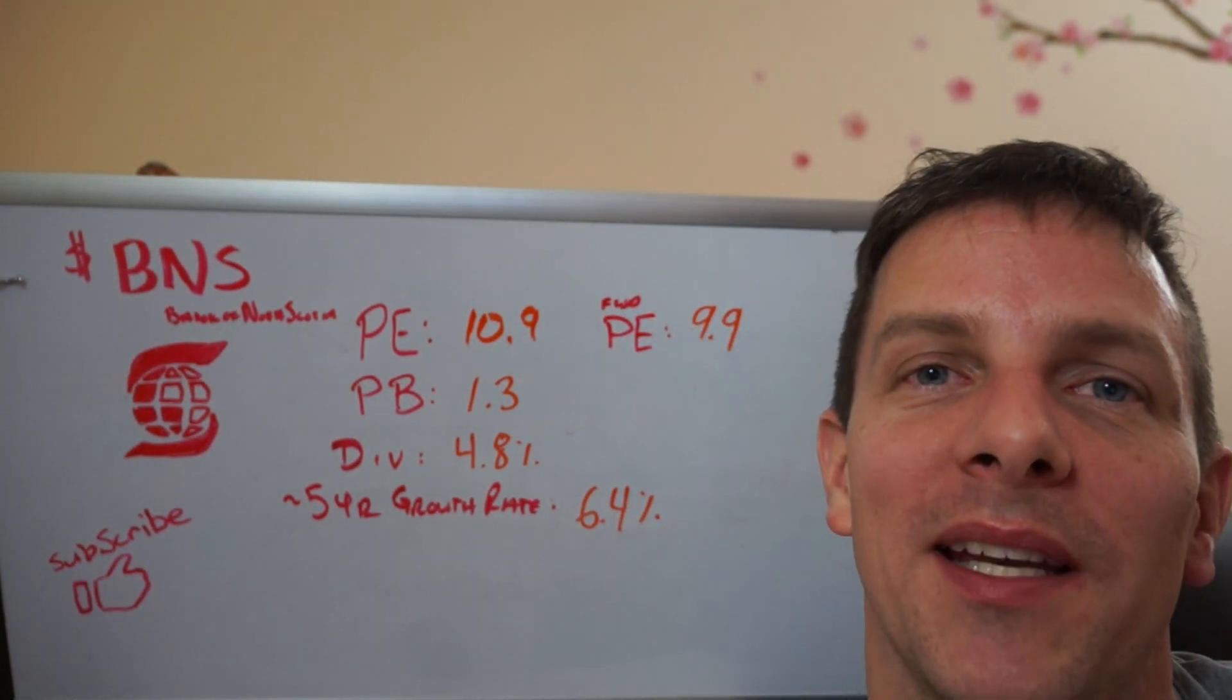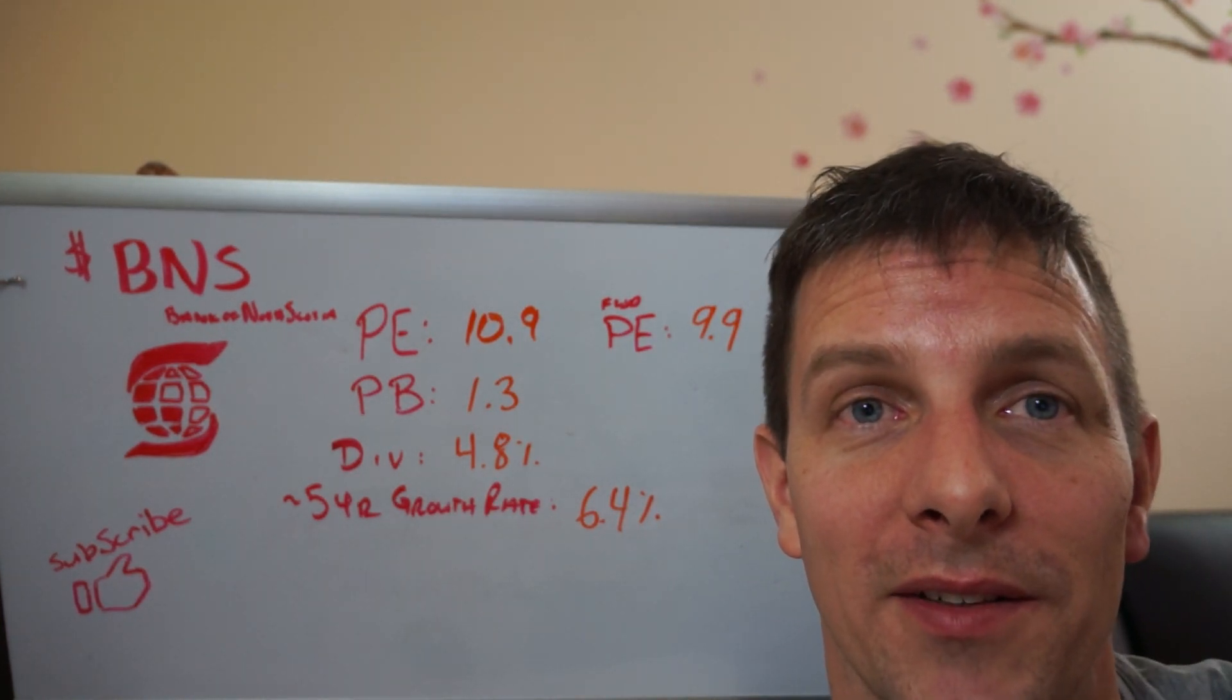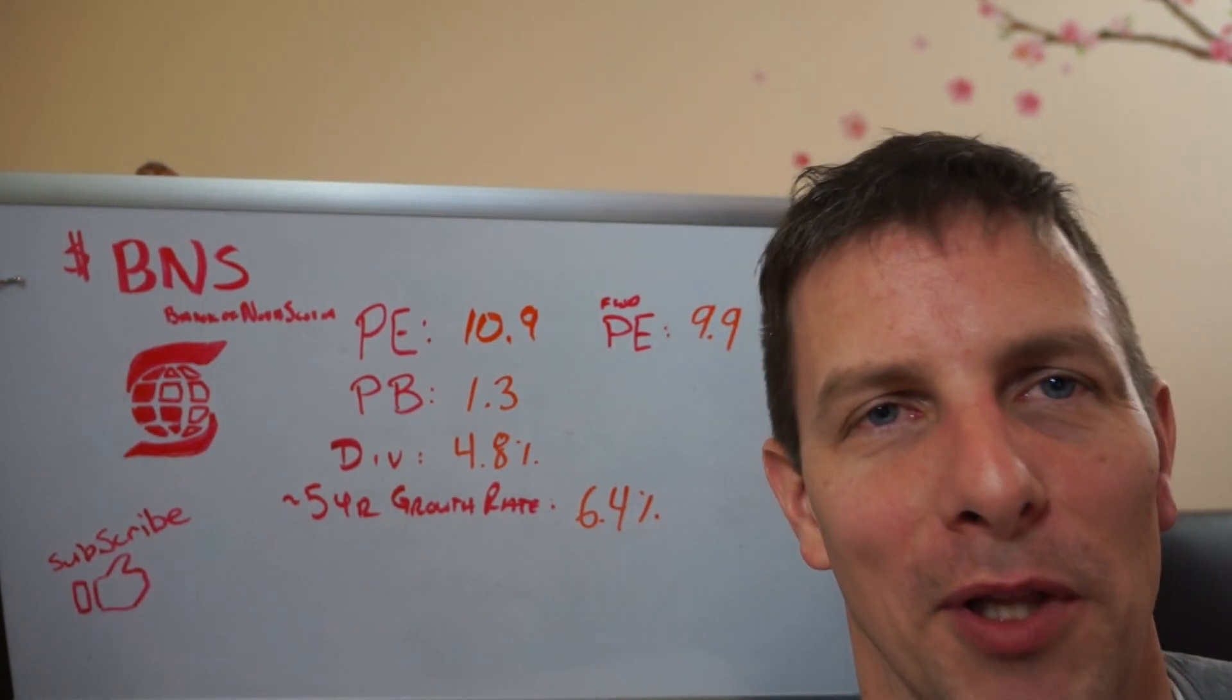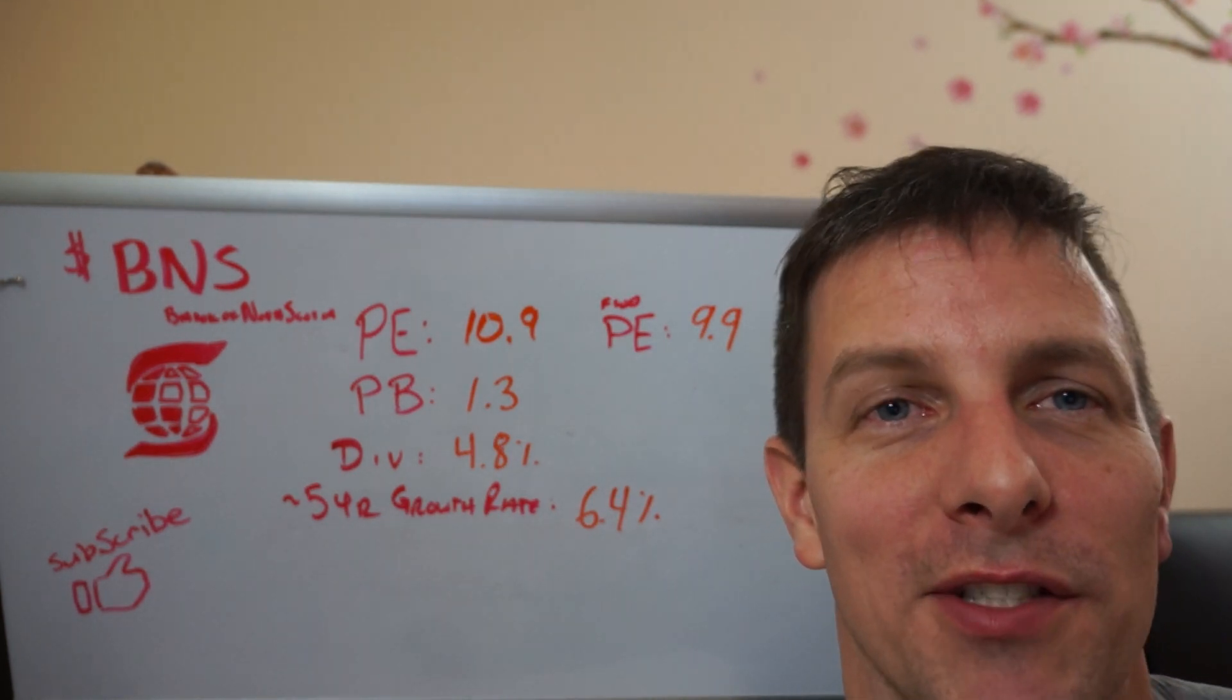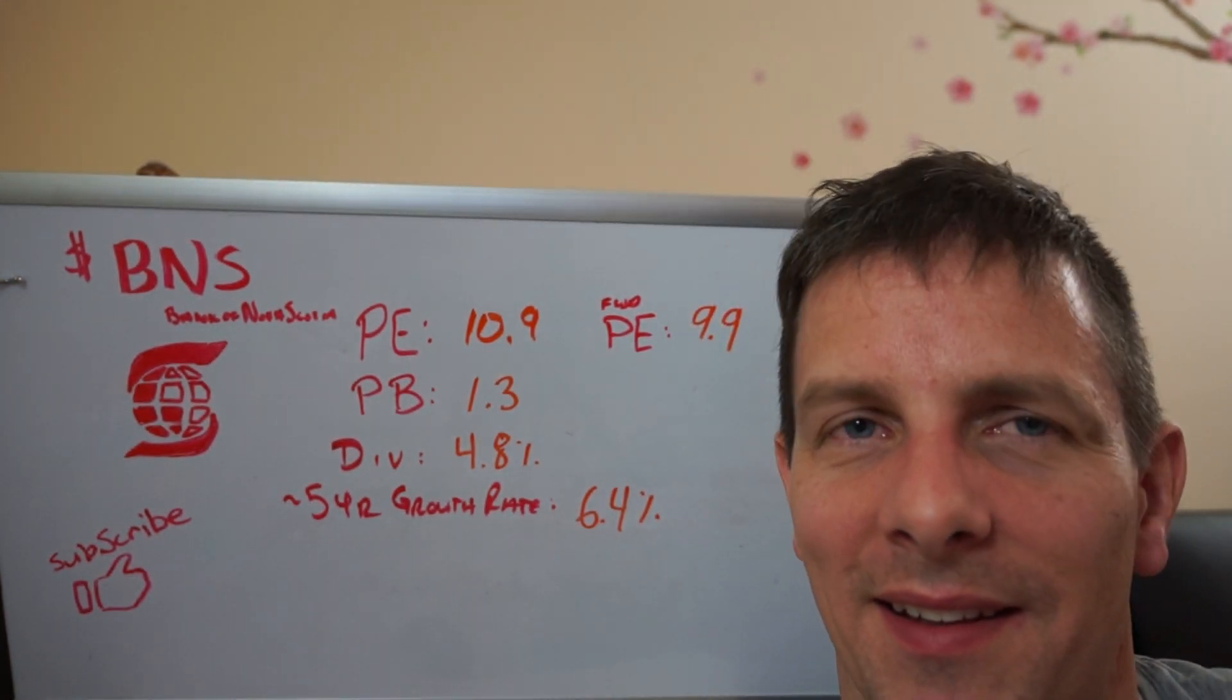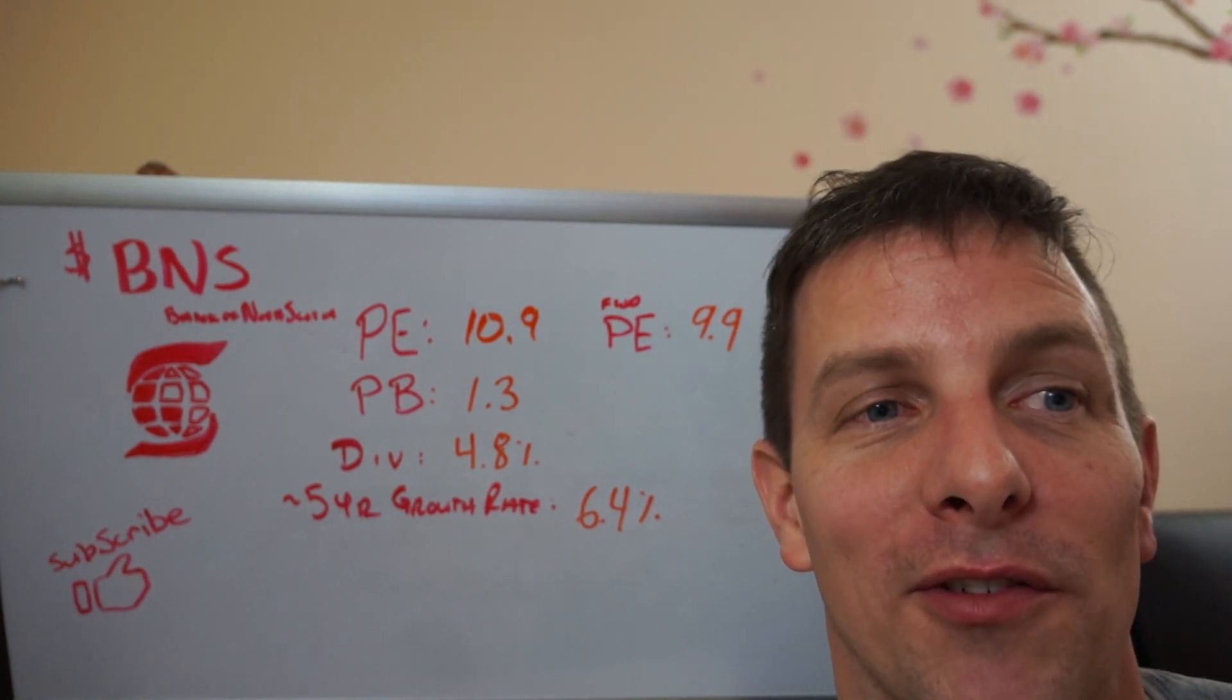Ticker symbol is BNS. Now, this company is a bank, a Canadian bank, and they are active in typical banking activities. Loans, personal loans, mortgages, corporate credit. They also have a trading platform called Scotia iTrade. And they are also positioned throughout several countries.